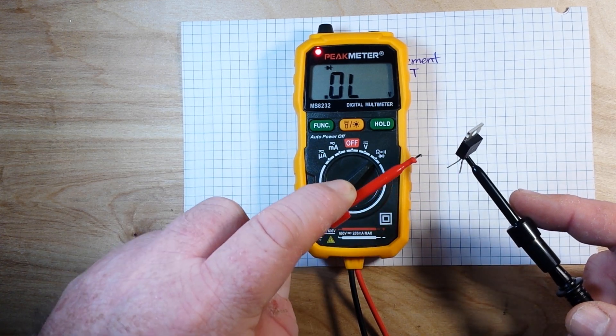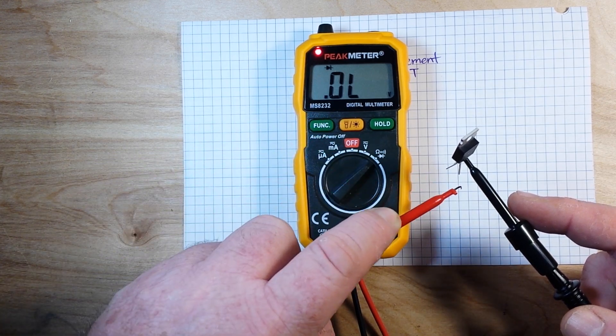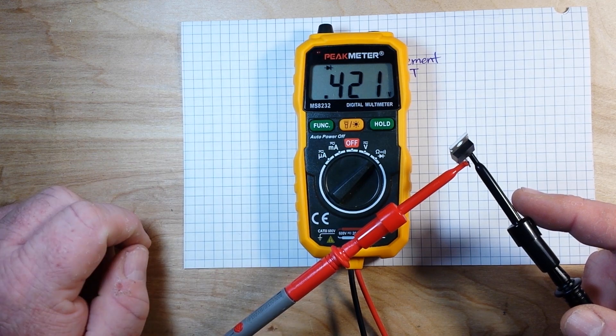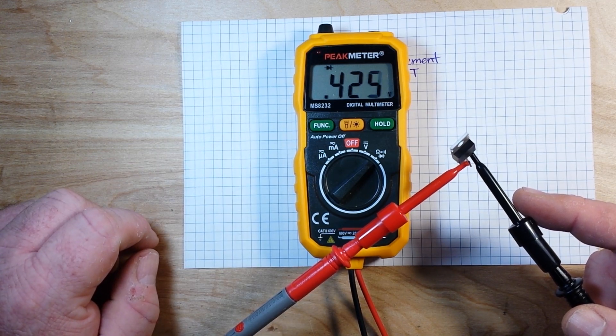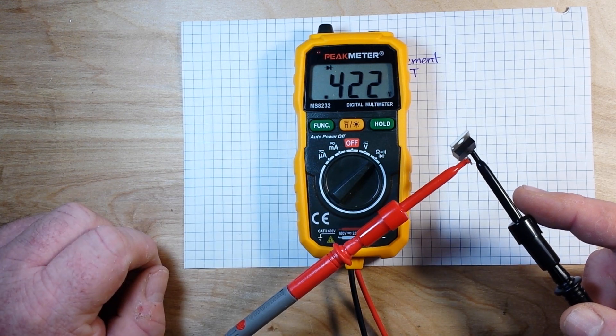Right, now if we take the positive terminal off of the drain and just touch it quickly to the gate and come back over here, well now look what we have. We've got conduction between drain and source because we have opened it with the gate.